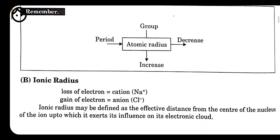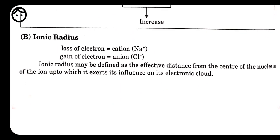Having completed atomic radius, we now discuss ionic radius. Ions form when elements lose or gain electrons to achieve stability. Sodium has configuration 2-8-1 and loses one electron, forming a cation (positive charge). Chlorine gains one electron to attain stability, forming an anion. Ionic radius is defined as the effective distance from the center of the nucleus of the ion up to which it exerts its influence on its electronic cloud.